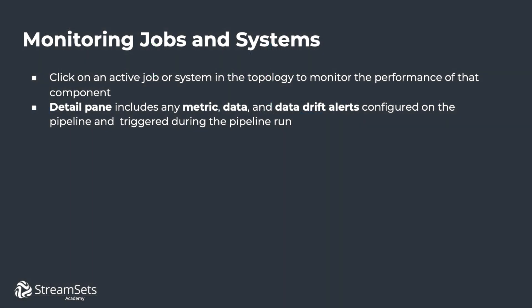Click on an active job or system in the topology to monitor the performance of that component. The detail pane includes any metric, data, and data drift alerts configured on the pipeline and are triggered during the pipeline run.